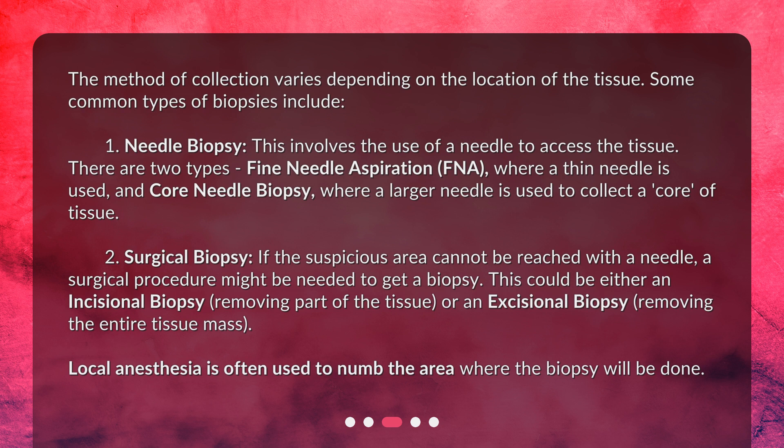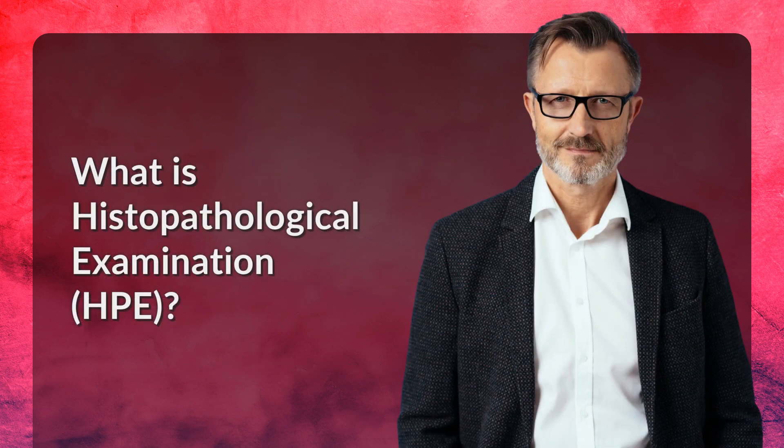2. Surgical biopsy — if the suspicious area cannot be reached with a needle, a surgical procedure might be needed to get a biopsy. This could be either an incisional biopsy, removing part of the tissue, or an excisional biopsy, removing the entire tissue mass. Local anesthesia is often used to numb the area where the biopsy will be done.